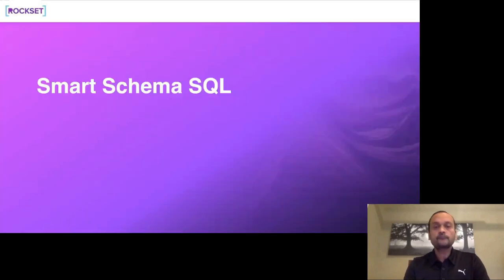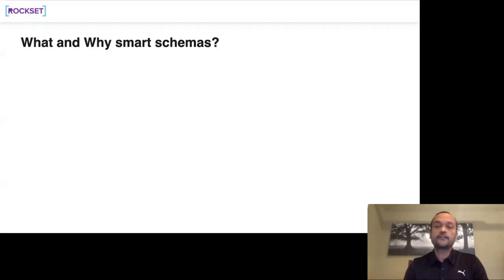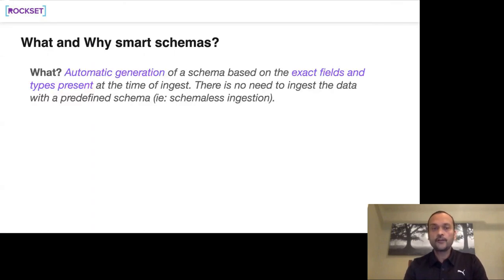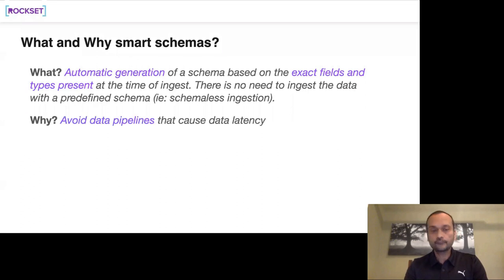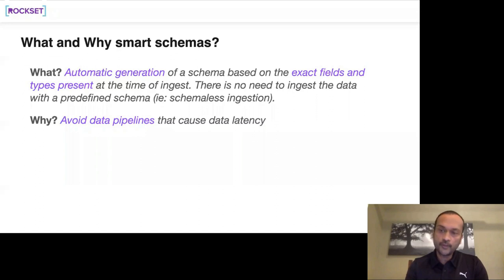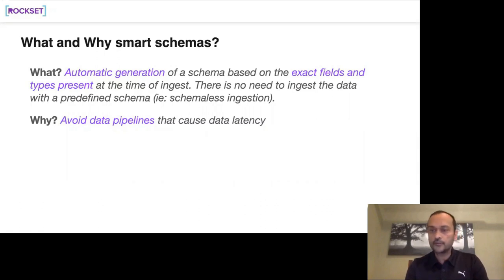The second major topic is how to enable SQL queries on this data. Rockset has JSON data on one side and SQL queries on the other, with nothing the user has to configure in the middle. We automatically generate an inferred schema based on the exact fields present at ingest time. It's not schema-free or schema-less — the schema is deduced dynamically. When you make a query, we look at all the data in your system at that point in time and determine: this table has 500 columns of these types.